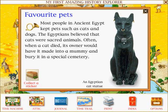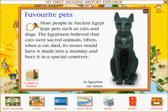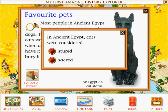Favourite pets: Most people in ancient Egypt kept pets such as cats and dogs. The Egyptians believed that cats were sacred animals. Often when a cat died, its owner would have it made into a mummy and bury it in a special cemetery. In ancient Egypt, cats were considered sacred.